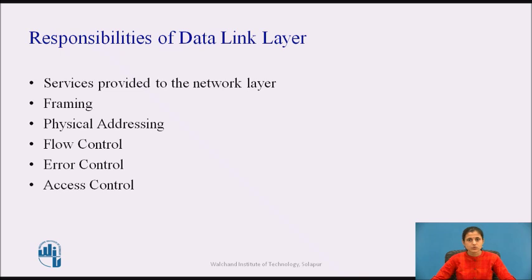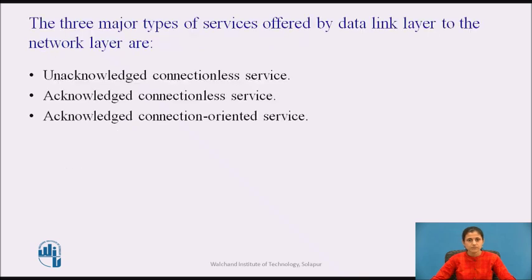The next function is access control. When two or more devices are connected to the same link, data link layer protocols are necessary to determine which device has control over the link at any given time. The principal service is transferring data from the network layer on the source machine to the network layer on the destination machine. The three major services offered by the data link layer to the network layer are: unacknowledged connectionless service, acknowledged connectionless service, and acknowledged connection-oriented service.